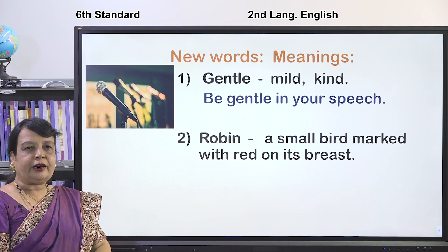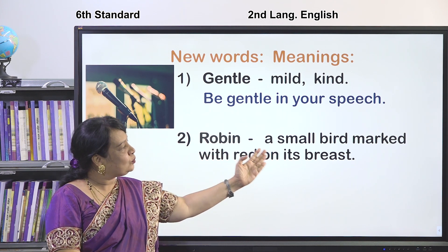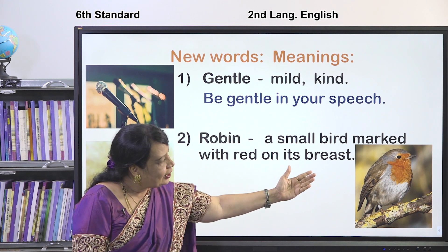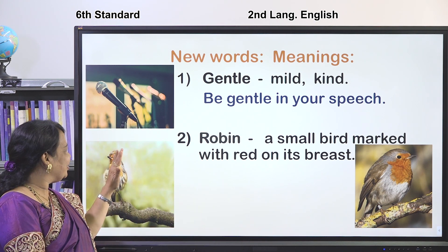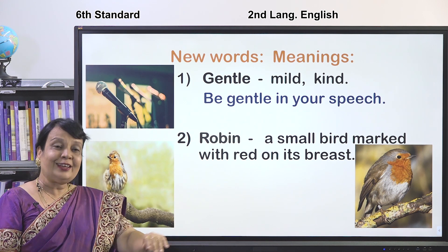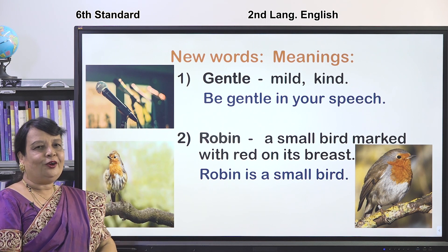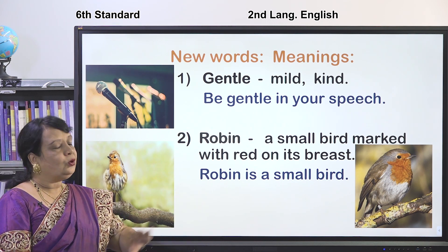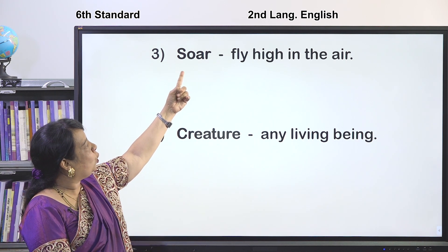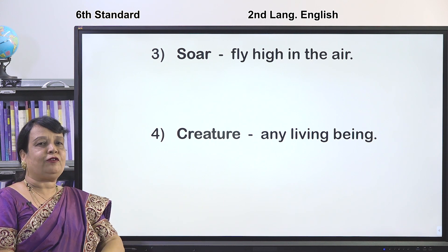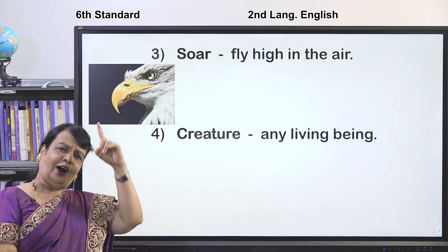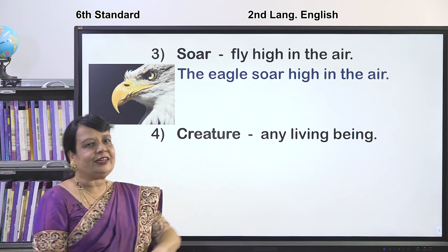The next word is Robin — it is a name of a bird, a small bird marked with red on its breast. The next word is SOAR — S-O-A-R — meaning to fly high in the air. Which bird flies high in the air? It is the eagle. The eagle soars high in the air.